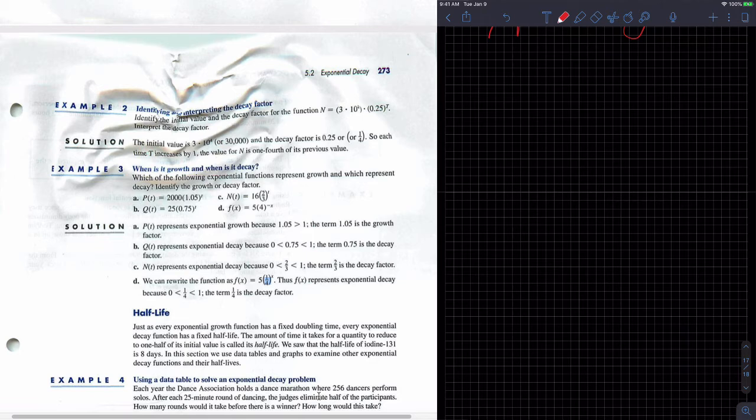Each year the Dance Association holds a dance marathon, this is example 4, where 256 dancers perform solos. After each 25-minute round of dancing, the judges eliminate half of the participants. So 25 minutes, half, gone.